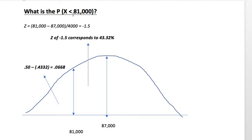If we want to determine what is less than 81,000, we would simply take 0.5, since that table is dealing with half of the standard normal, minus the corresponding area of 0.4332, which gives us 6.68%.